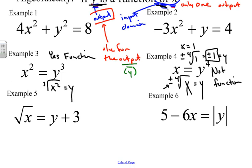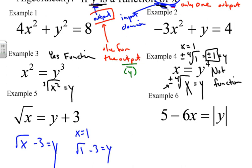The next example has a square root. The square root by itself can be a function. When we solve, we get Y = √(x − 3). If I plug in a value, there is no plus or minus — just one value. So yes, this is a function.